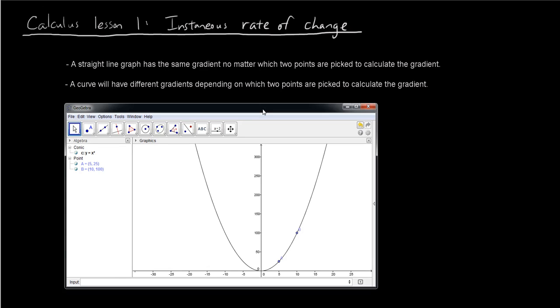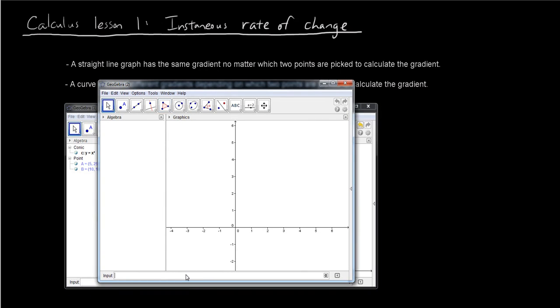Okay, so before we start this lesson, some of the things we have established previously are that a straight line graph will have the same gradient no matter which two points are picked to calculate the gradient. So if the graph is a straight line, for example, y equals 2x, at every point, no matter which two points you pick to find the gradient, gradient is rise over run, it will always give you the same gradient because the slope of this line is the same no matter which two points you pick.